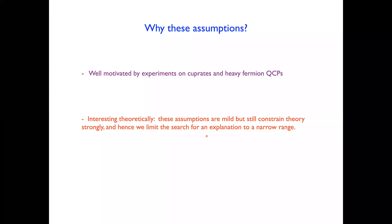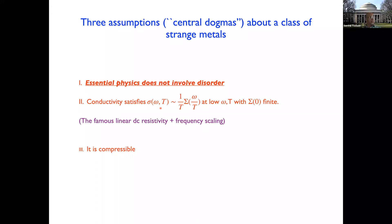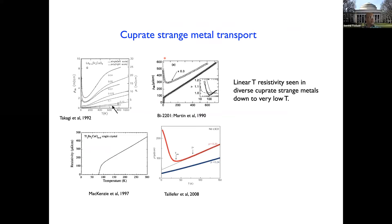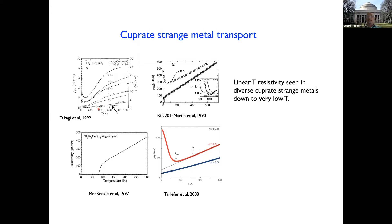Let me spend a few minutes on the experimental basis for these assumptions. The first assumption — that the essential physics does not involve disorder — is supported by data showing linear-T resistivity in various cuprate materials. Cuprates are the copper-based high-Tc superconductors. At optimal doping, where Tc is highest, linear-T resistivity is best seen. The data shows it is linear from very low temperatures all the way up to room temperature.